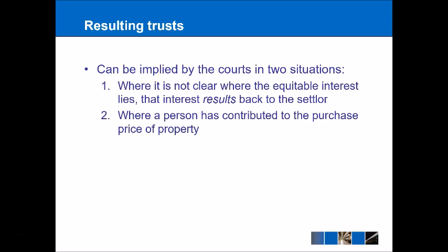That deals with express trusts. Now we come to resulting trusts, which can be implied by the courts in two particular situations. First, if it is not made clear who the beneficiary is going to be — going back to the diagram, the arrow from settler to beneficiary effectively flips around and reverts back to the settler, who then becomes the beneficiary. That's a resulting trust because the benefit results back to the settler. Second, if a person has contributed to the purchase price of a house — say a house costs £100,000 and you contributed £25,000 — then you would be entitled to a 25% share under a resulting trust, which is relatively straightforward.